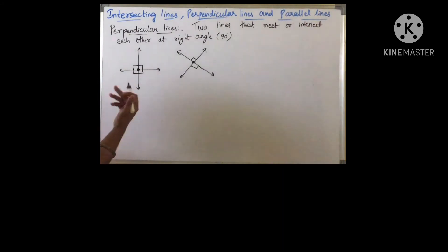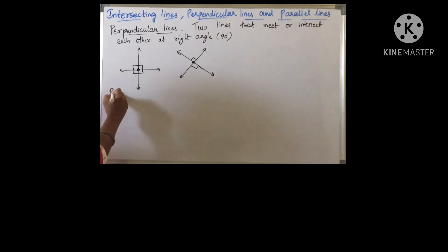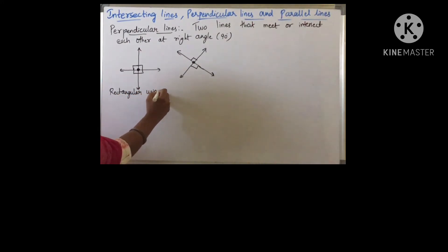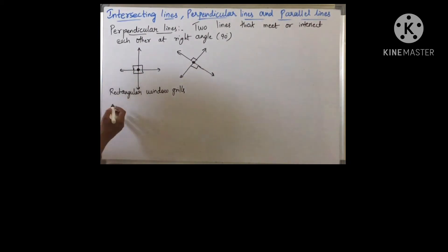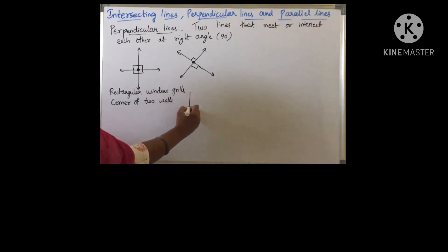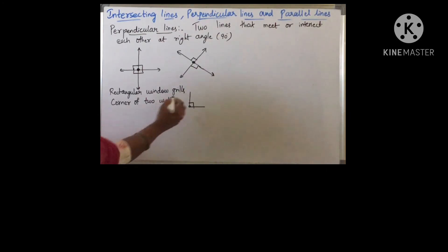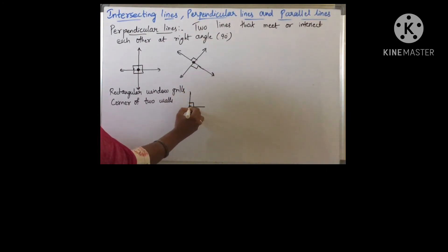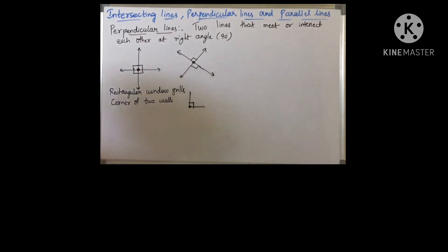Perpendicular lines can be found everywhere around us, like a street intersection and rectangular window grids, and the corner of two walls. This is one wall and this is another wall — here a right angle is formed. This line and this line are intersecting at this point, and here is 90 degrees.